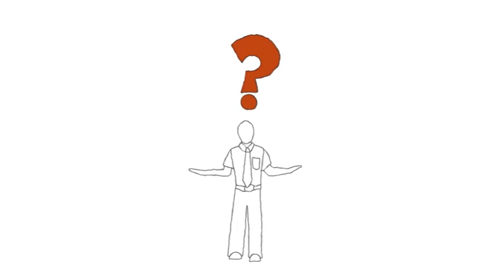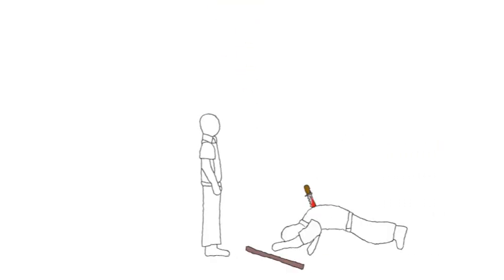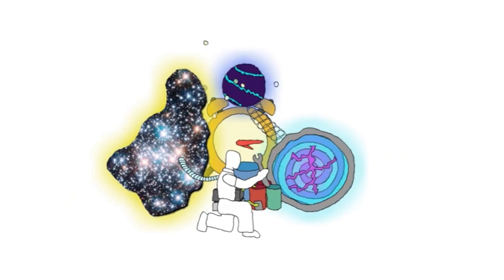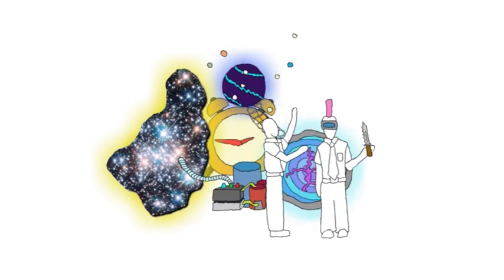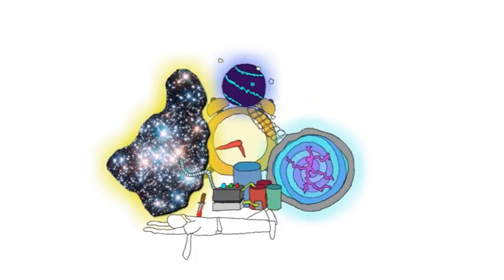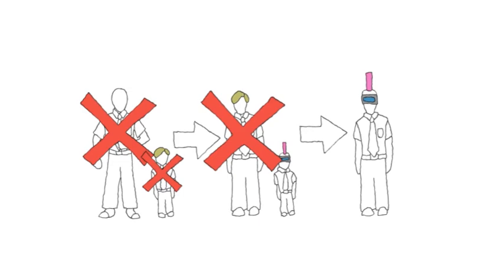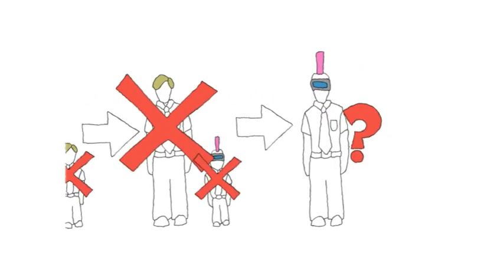This of course raises all sorts of questions, like the grandfather paradox. Say you build a time machine and it lasts for generations, and one of your grandchildren comes back and kills you. How would that work? If you were killed before your grandson's father, your son, was conceived, then how could he be around to come back and kill you?